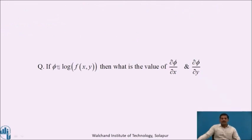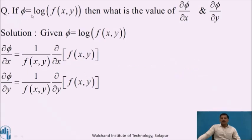Now pause the video and write down the partial derivatives of the function φ = log f(x, y). The partial derivative of φ with respect to x is given as (1/f(x,y))·(∂/∂x)f(x,y), and similarly the partial derivative of φ with respect to y is (1/f(x,y))·(∂/∂y)f(x,y). This is the formula used to find the partial derivative of a function of the form φ = log(function).